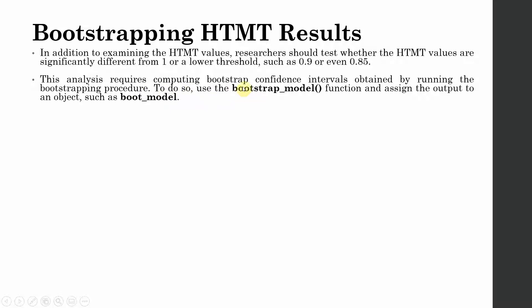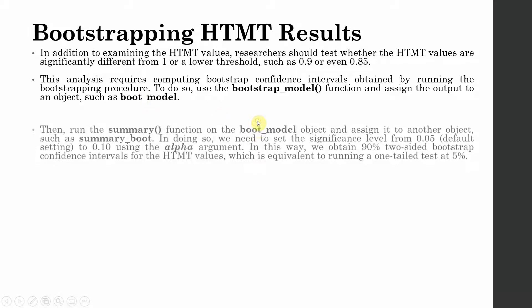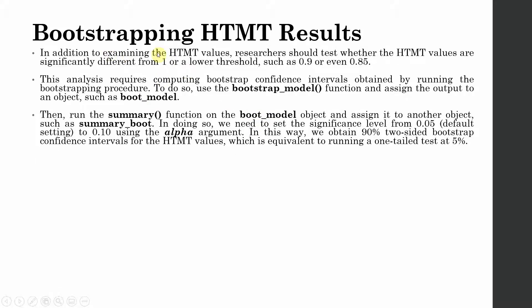To do so, we are going to use this function and then assign the output to this particular object as we've done in previous lectures as well. In addition to examining the HTMT values, we are going to examine the bias corrected confidence interval as well. Once we run the bootstrap model, we are going to generate the summary and store the summary in summary underscore boot object. How do we do this?